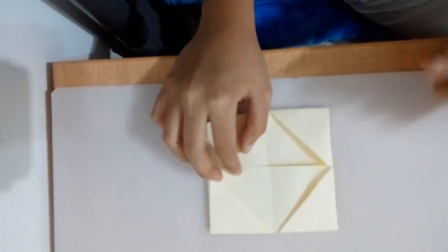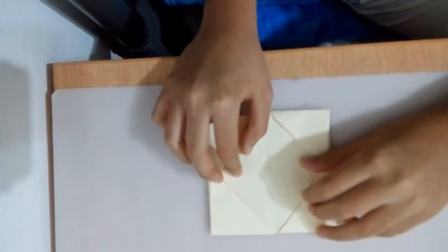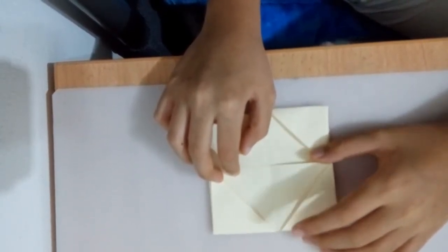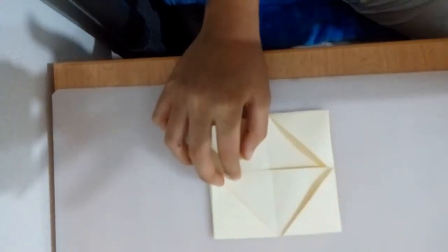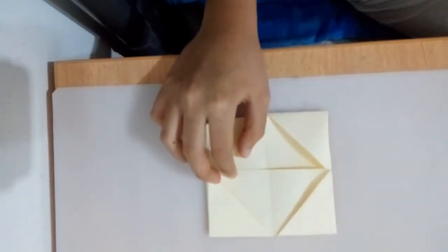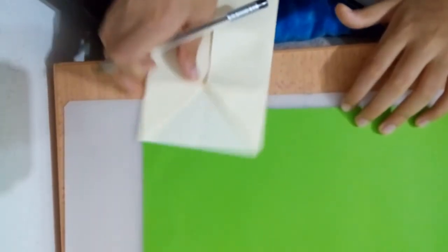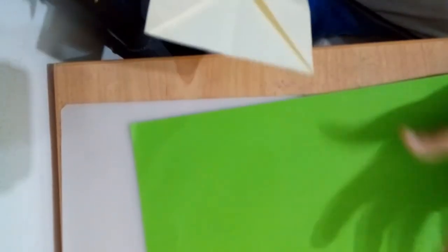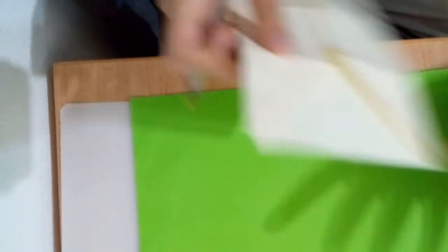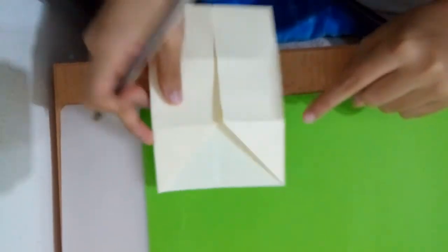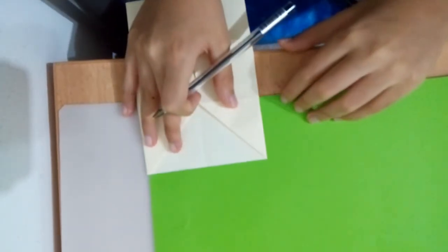Now you are going to keep decorations. If you don't want decorations, just skip this part. Then take an A4 size paper, then draw it, then cut it.